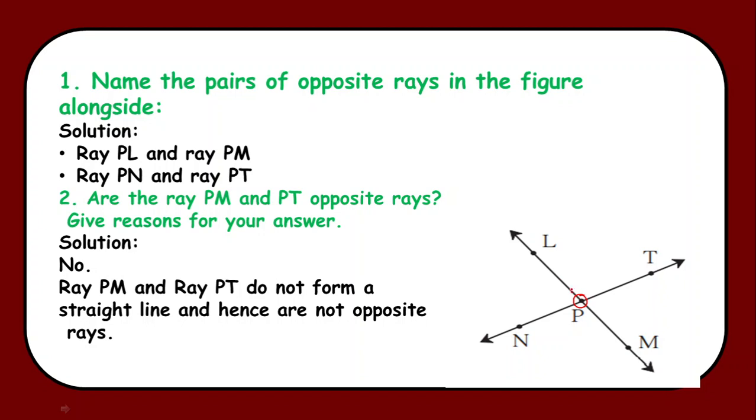Point P is the common origin for both of them. This PL and PM they are moving exactly in the opposite direction. And the third condition if you see they are making exactly an angle of 180 degrees. That is they form a straight line. That's why ray PL and PM will be a pair of opposite rays.